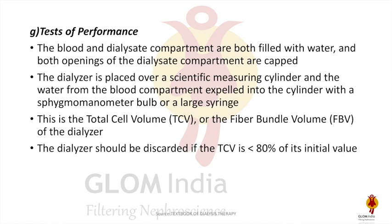For the performance test, both the blood and dialysate compartments are filled with water. Both openings of the dialysate compartment are kept closed, the dialyzer is placed over a scientific measuring cylinder, and the water from the blood compartment is expelled into the cylinder using a sphygmomanometer bulb or large syringe. This is the total cell volume — also called fiber bundle volume. If the total cell volume is less than 80% of its initial value, the dialyzer should be discarded.